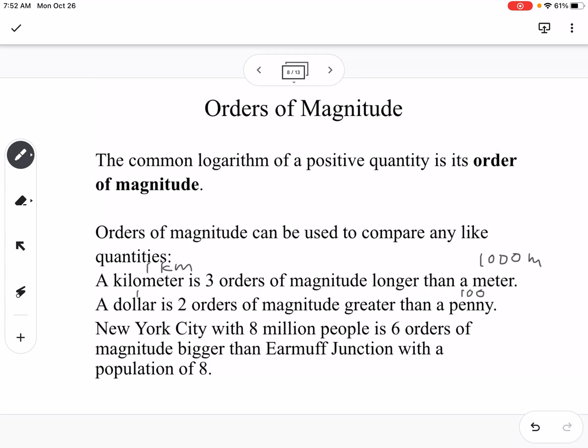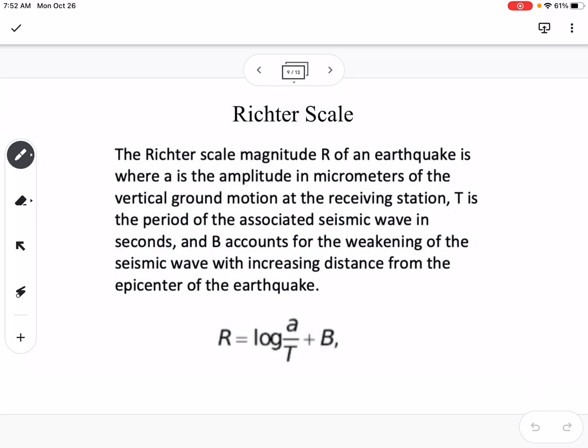New York City with 8 million people is 6 orders of magnitude bigger than Earmuff Junction with a population of 8. So now we're going to talk about some real life examples of this.